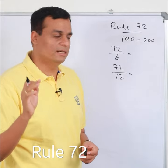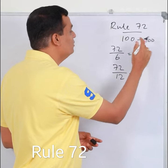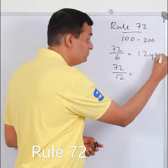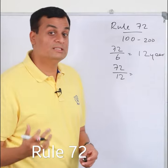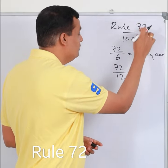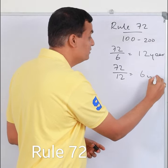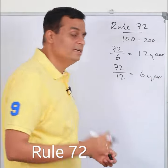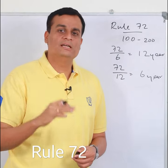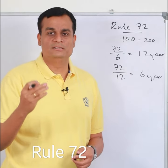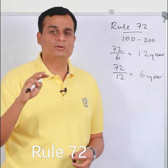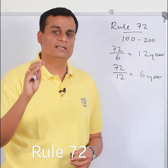We're going to talk about different growth rates — 12% growth, 2% growth, and 6% growth. The formula is 72 divided by the growth rate, which gives you the number of years to double. For example, 72 divided by 12 gives 6 years. We're also going to talk about the interest rate — it's 72 divided by that number, giving you the years to double.